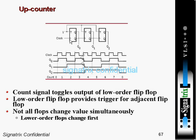Looking at the graph — this is the clock. At the first positive edge of the clock, Q0 is zero so it will toggle, giving you one. After the next positive edge you get zero again — Q0 is always toggling, so you get this clean waveform.